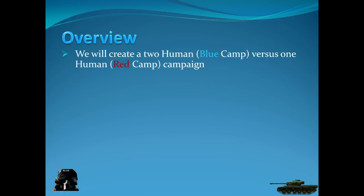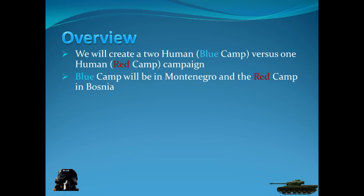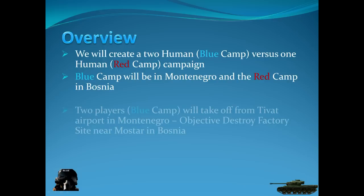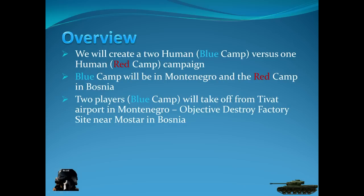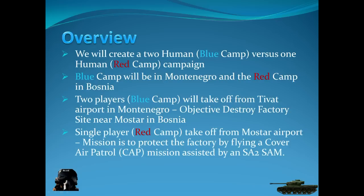Let's continue with an overview. What we'll do today is create a quick campaign with a two human versus one scenario. You're going to have a blue camp flown by two people, and one human will fly the red camp. The blue camp will be in Montenegro and the red camp will be in Bosnia. The two players in blue will take off from Tivat airport in Montenegro with the objective of destroying a factory near Mostar in Bosnia.